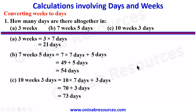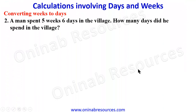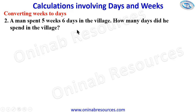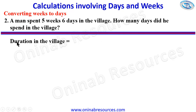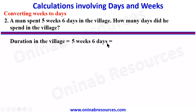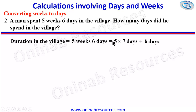That's all for the solution of problem 1. We go to problem 2. A man spent 5 weeks 6 days in the village. How many days did he spend in the village? We look at the duration in the village: he spent 5 weeks 6 days. That gives us 5 times 7 days plus 6 days. 5 times 7 is 35 plus 6 days, giving us 41 days. So the man spent 41 days in the village.